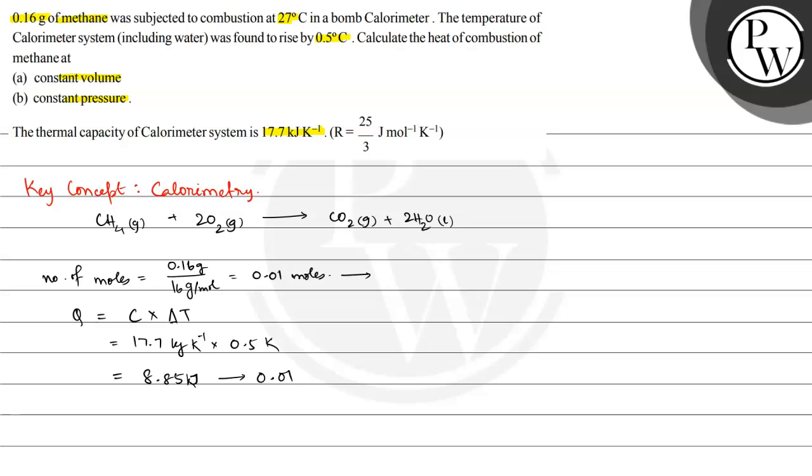Heat of combustion is Q divided by number of moles, which is 8.85 divided by 0.01. This equals 885 kJ/mol. This is the heat of combustion of methane.